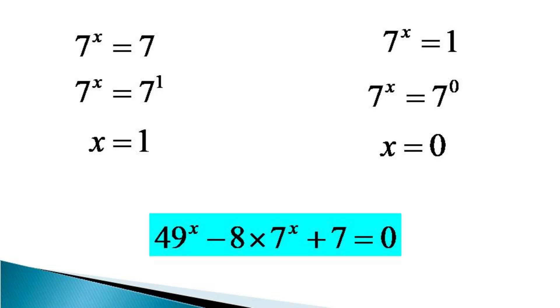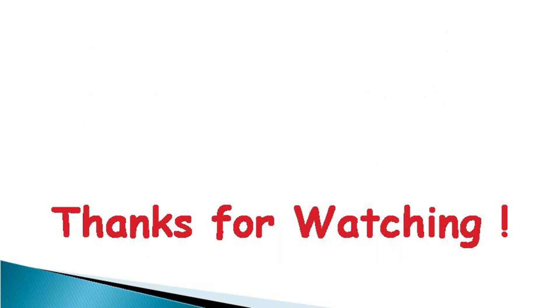It can be verified from the original equation that both these values of x satisfy the given equation, and hence both x is equal to 1 as well as x is equal to 0 are the solutions of the given equation. Thanks for watching.